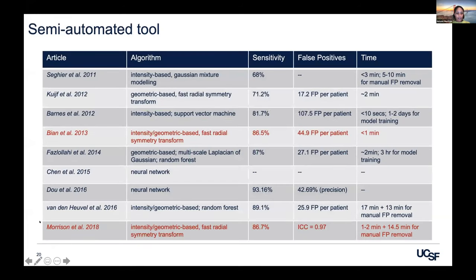Going back to the comparison chart and adding in our updated tool, we have approximately the same sensitivity as our initial tool. Processing takes about one to two minutes, and the manual review portion ranges from five minutes for patients with few microbleeds up to 22 minutes for patients with upward of 300 microbleeds. Our inter-rater intraclass correlation, across different neuroradiologists, was 0.97 — pretty good agreement.